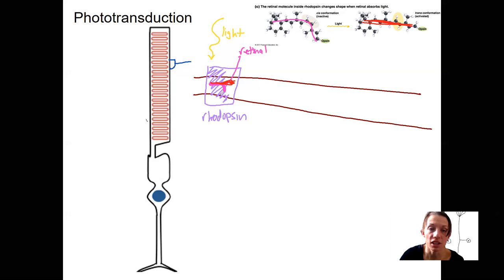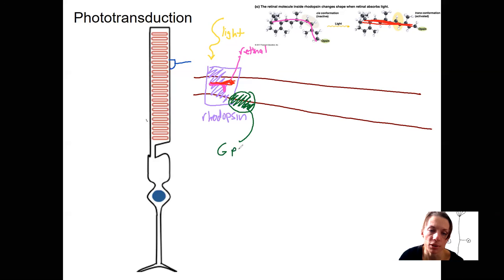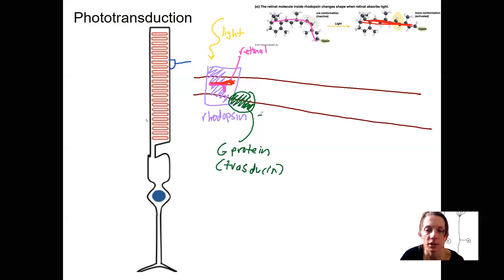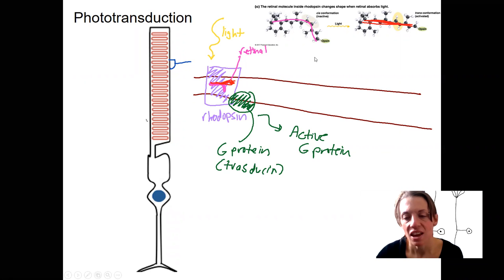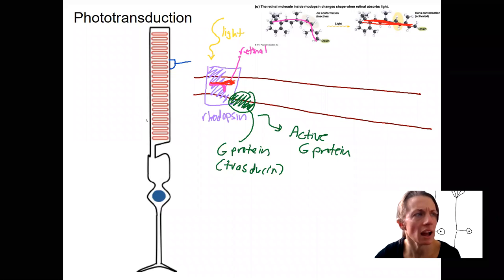This is going to initiate a signaling cascade. This rhodopsin protein is actually a G-protein coupled receptor. The G-protein for vision is called transducin, because it's going to transduce that signal. When light binds, this G-protein is going to be activated. This active G-protein is going to activate a protein called phosphodiesterase.